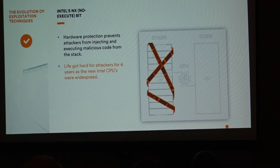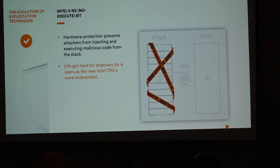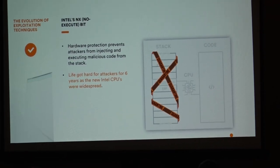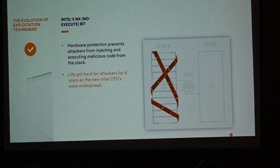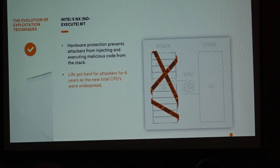There were other software-level attempts — stack cookies and similar mitigations — but they didn't prove as effective. Given a vulnerability at hand, you can bypass software mitigations. The NX bit was harder to bypass, but everything is bypassable in this world — that's the beauty and the challenge. There's always a cat-and-mouse game.